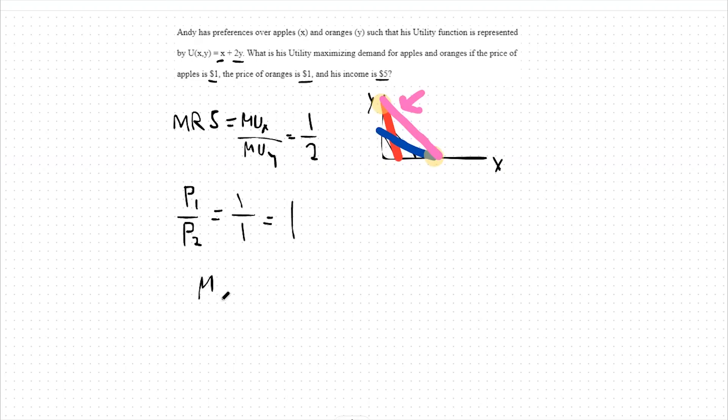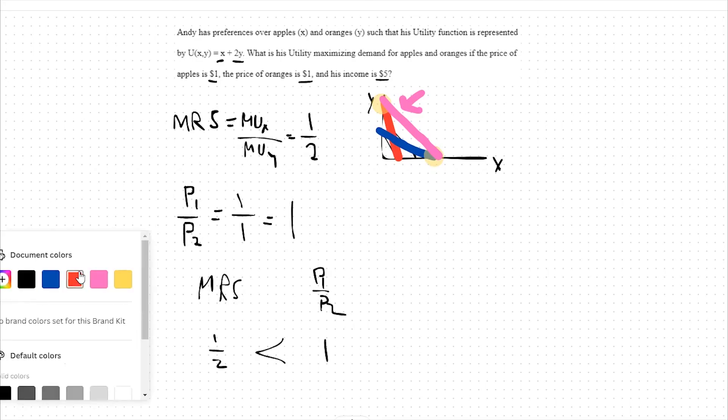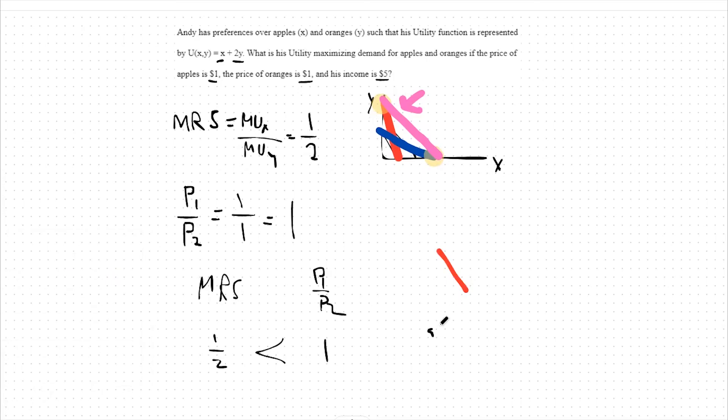To compare, let's take a look at which is greater, our marginal rate of substitution or our price ratio. As we see, the MRS is one-half, the price ratio is one, so our price ratio is greater than our marginal rate of substitution. That case is denoted by the red line on our graph. This means we purchase all of good y and none of good x, so we purchase all oranges with our income.